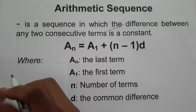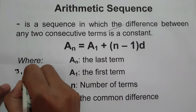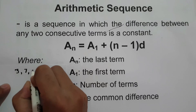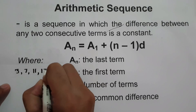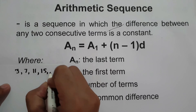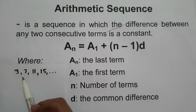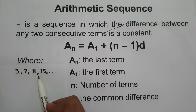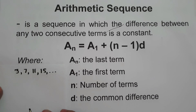For example, we have the sequence 3, 7, 11, 15. This is an example of an arithmetic sequence.